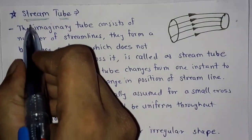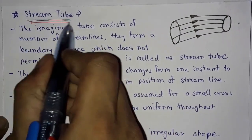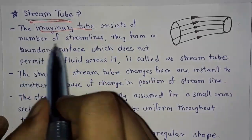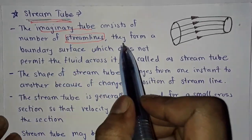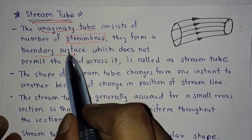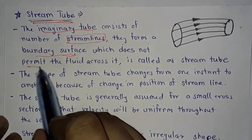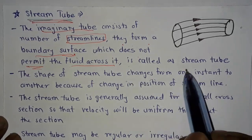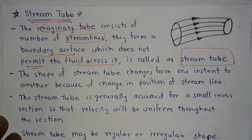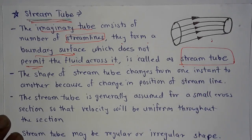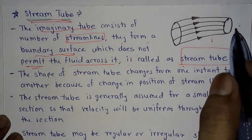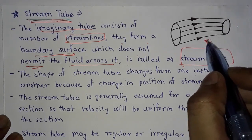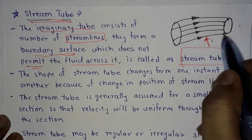Next is stream tube. The imaginary tube that consists of a number of streamlines forming a boundary surface which does not permit fluid to cross it is called a stream tube — it does not allow any fluid to pass across it.